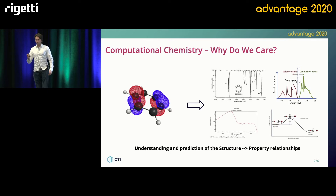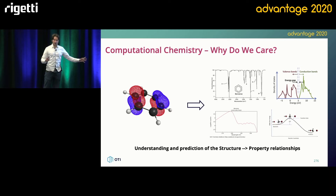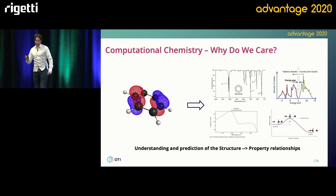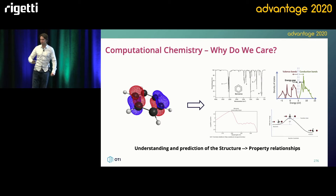All of chemistry — whether you do computational or organic chemistry — comes down to this fundamental principle: that structure results in the property of a material.